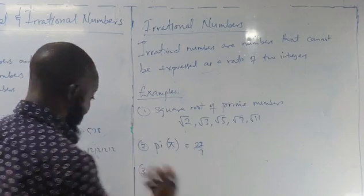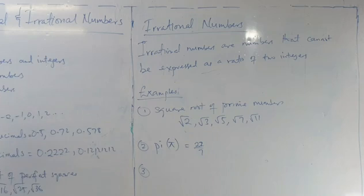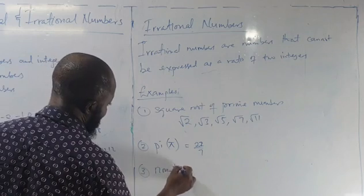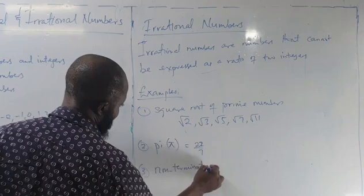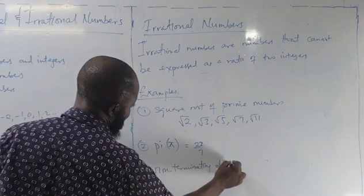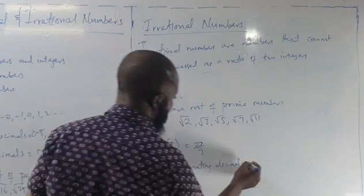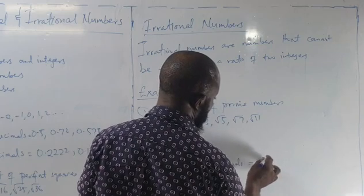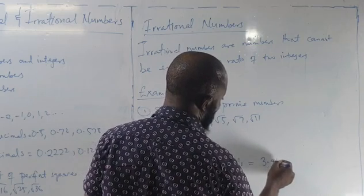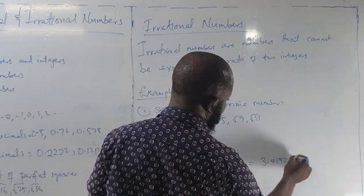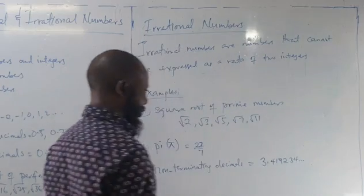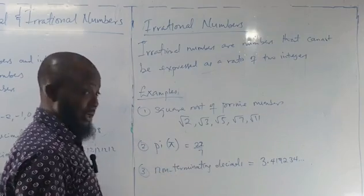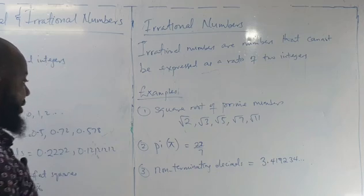The third example of irrational numbers is non-terminating decimals — the opposite of terminating decimals. These are decimals like 3.419234... where the decimal continues and does not end. That number is a non-terminating decimal.